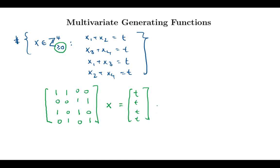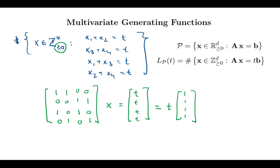I can think of this right-hand side vector as t times the vector (1, 1, 1, 1), so t is a scalar here. What you see is precisely a system like this, with non-negativity constraints on top. What we're computing here is the Ehrhart polynomial of a polytope — in this case, my polytope lives in 4 dimensions. I invite you to think about what this polytope looks like.